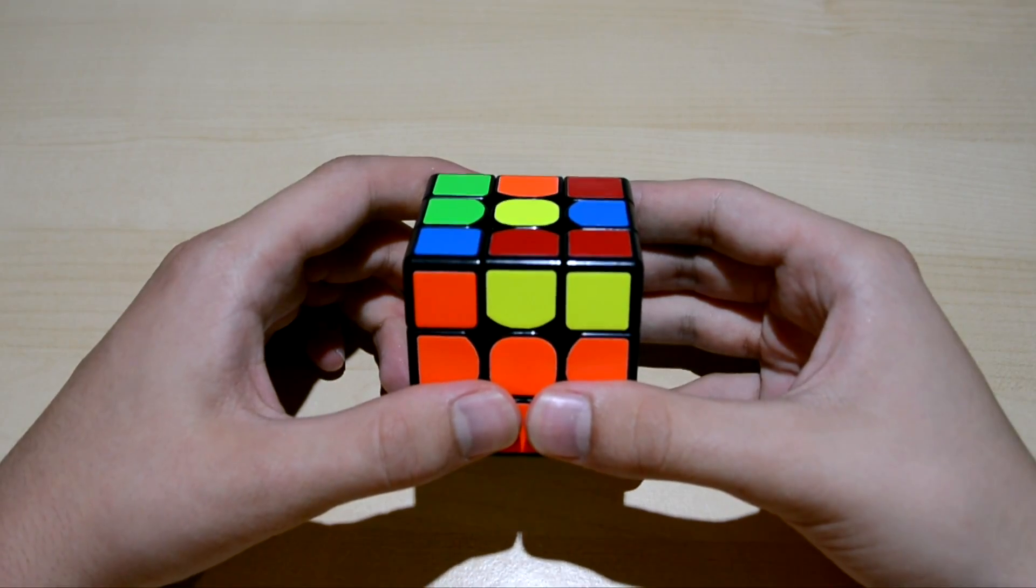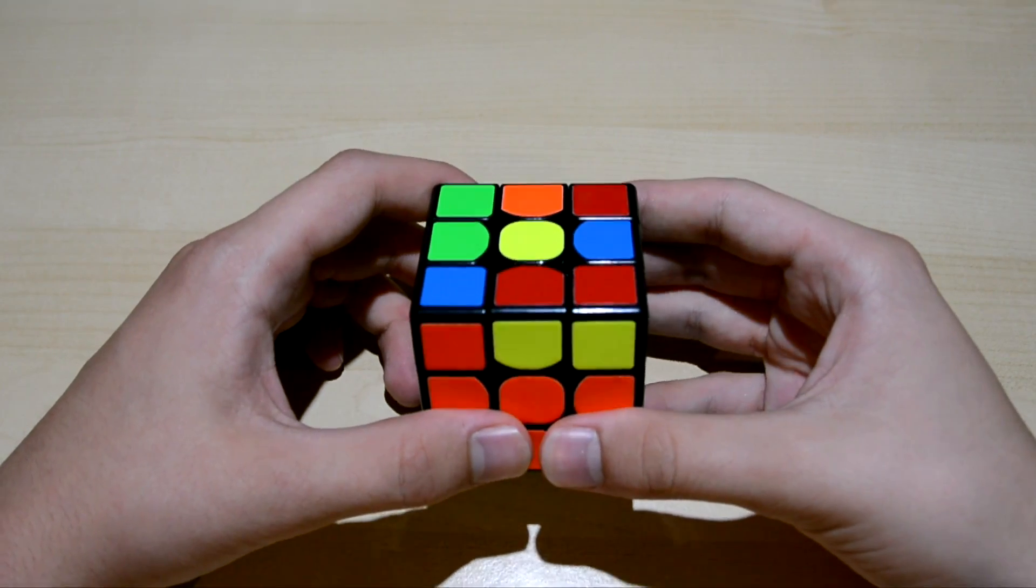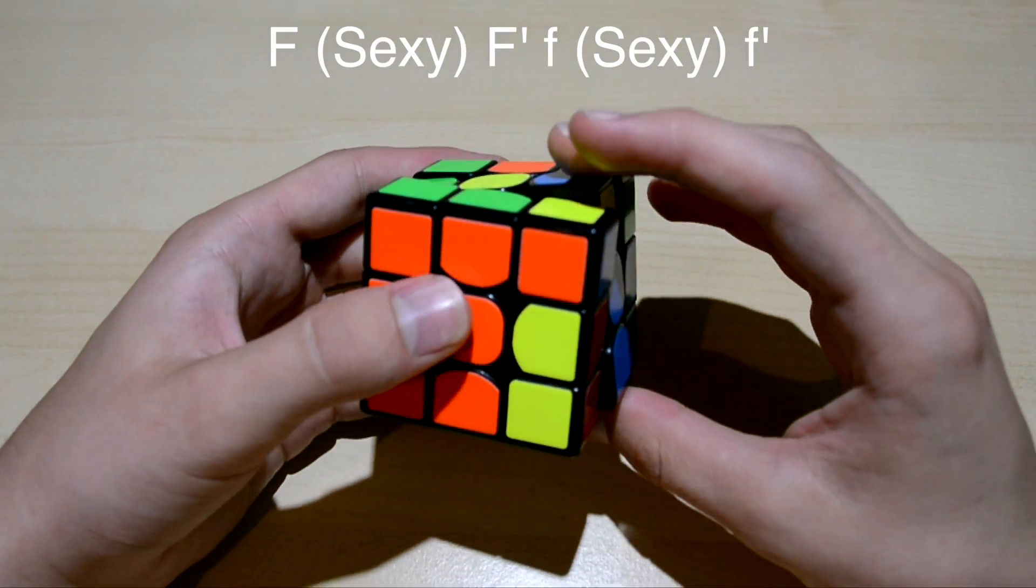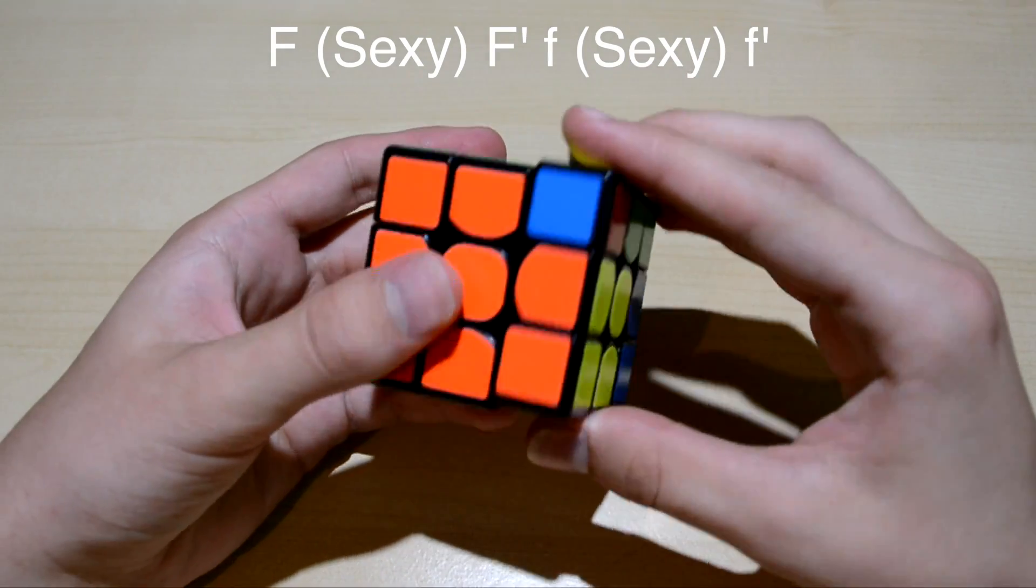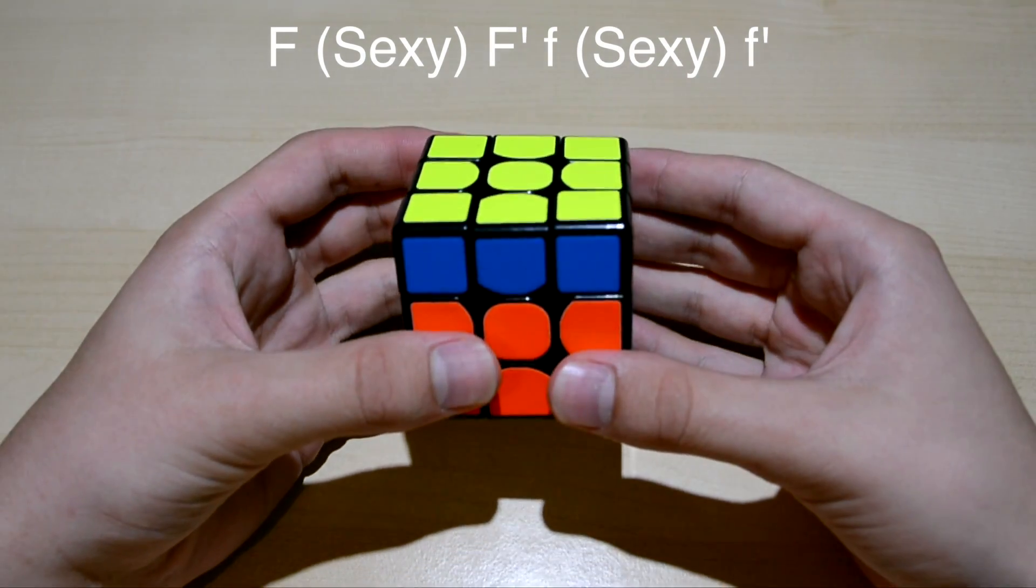The second OLL is also a pretty easy algorithm to learn. You start with an F, do a sexy move, an F prime, a fat F, sexy moves and a fat F prime.